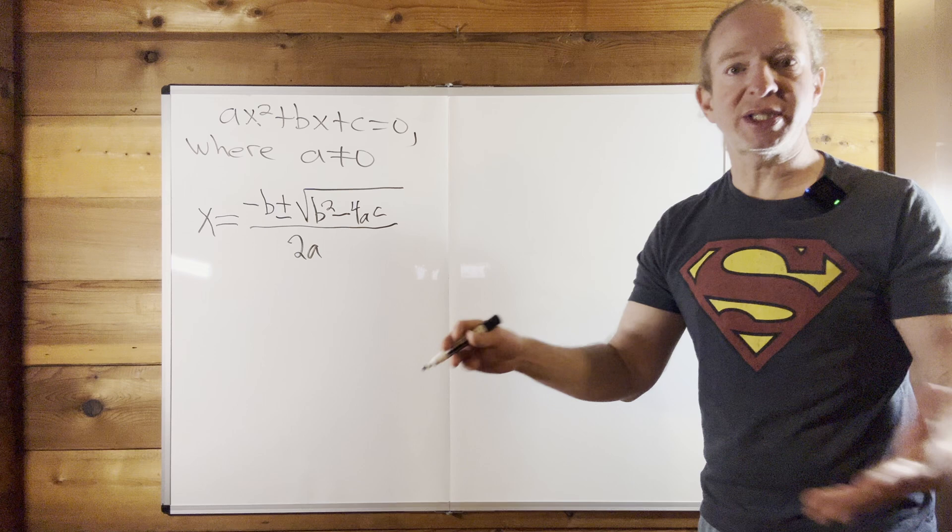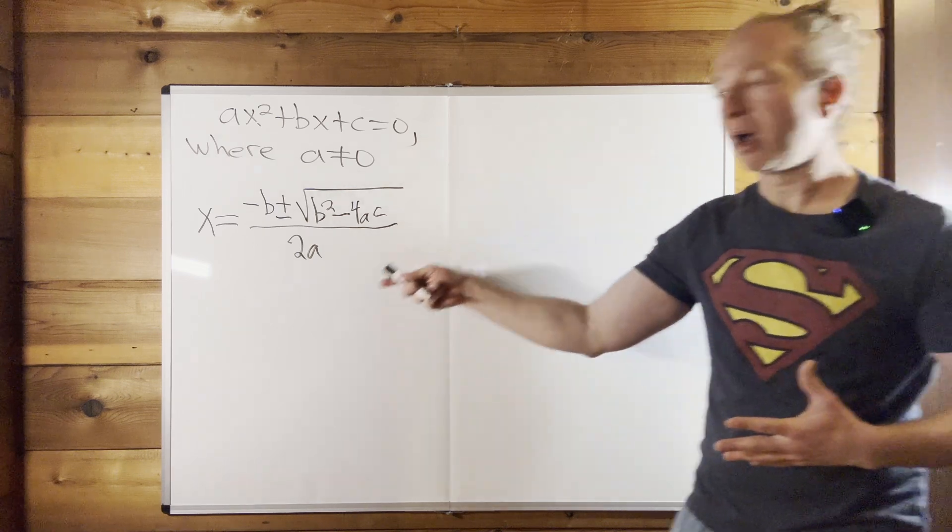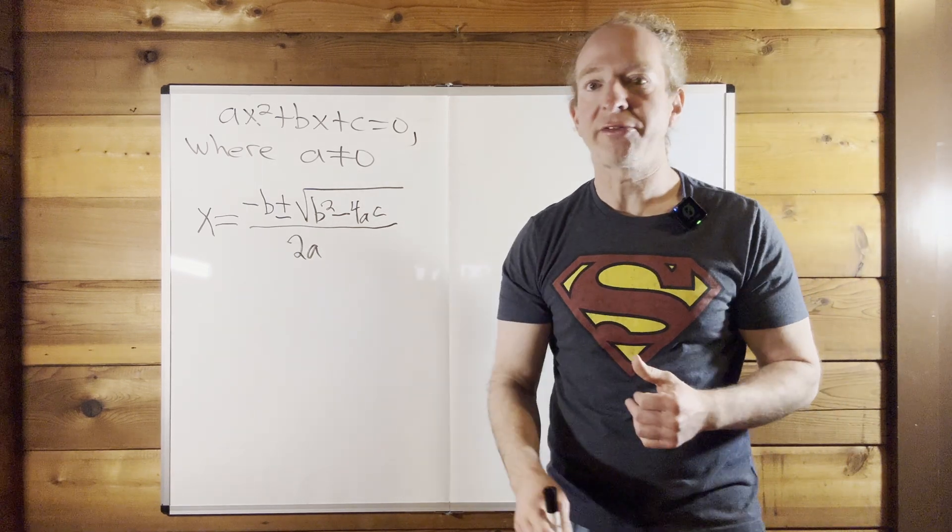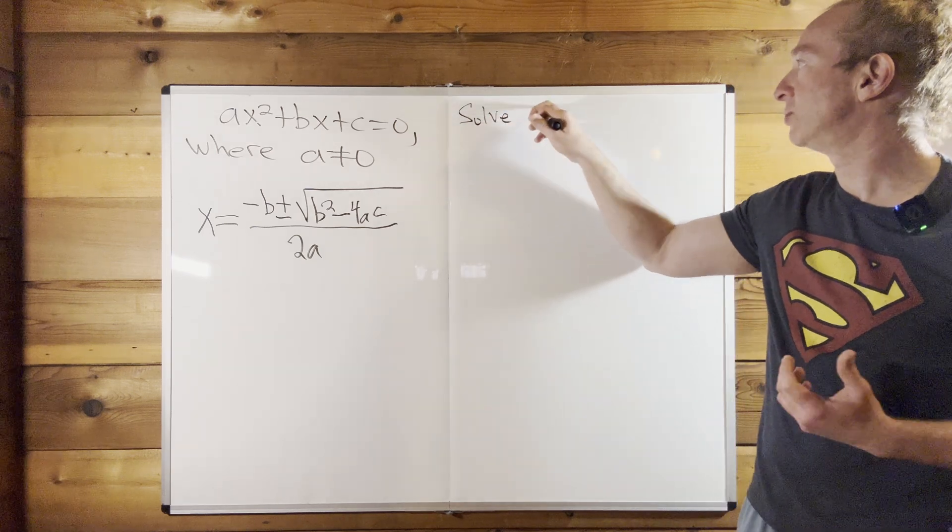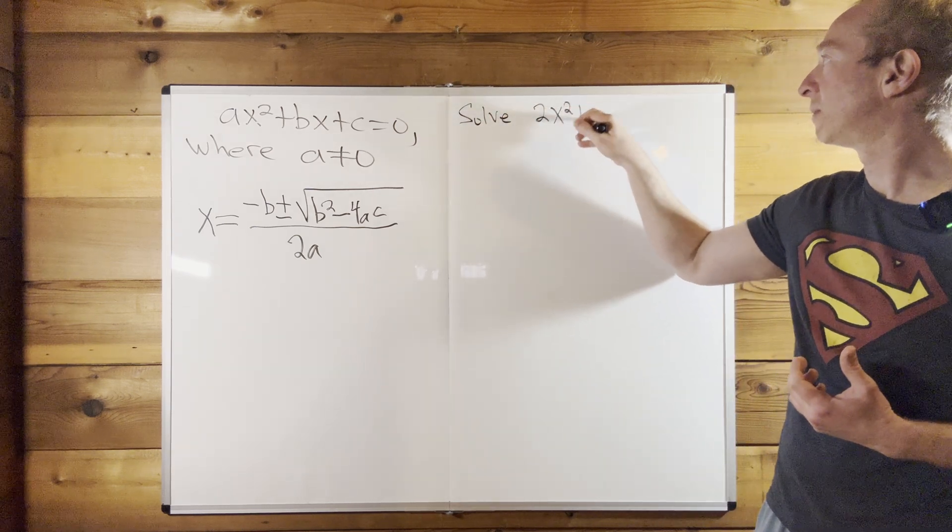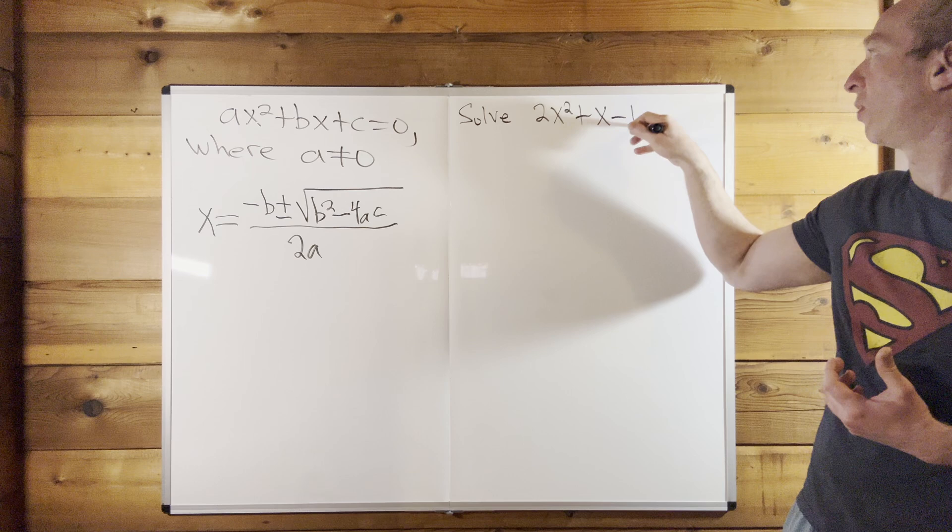Okay, so let's go ahead and do an example. And I'll leave the formula up. Let's go ahead and solve, let's see, I'm just going to make one up. Let's do 2x squared plus x minus 1 equals 0.